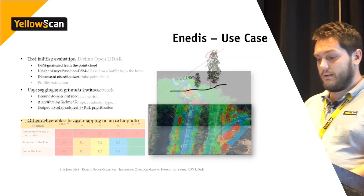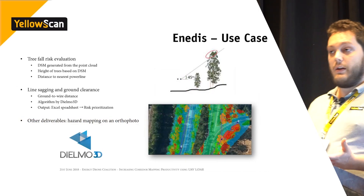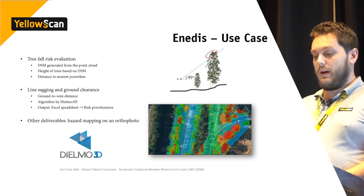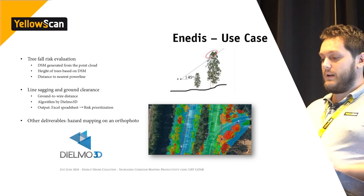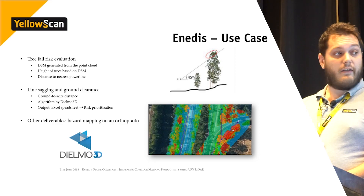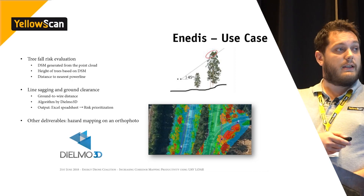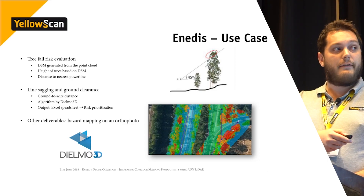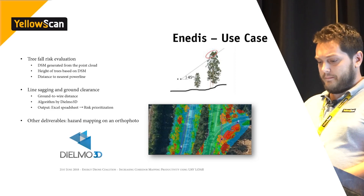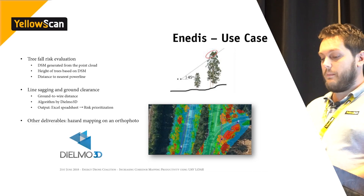The second result is a tree fall risk evaluation. Based on the classified point cloud, they generate a DTM (digital terrain model) and a DSM (digital surface model). From these they get the height of each tree and, based on the power line location, can easily determine if a tree would fall on the power line in a worst-case scenario — making it easy to define pruning priorities.